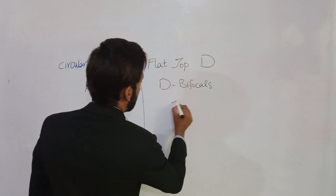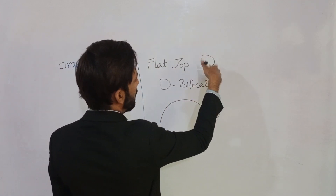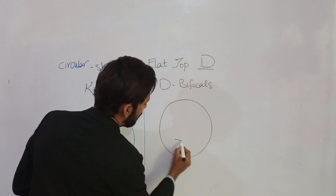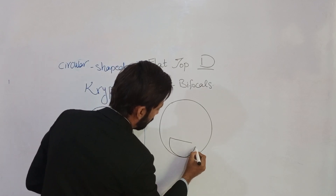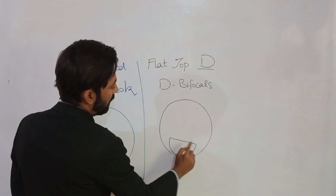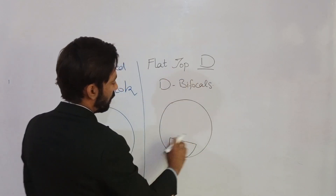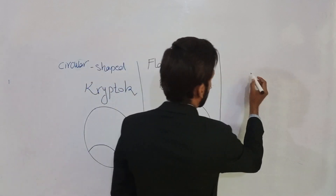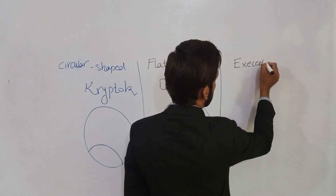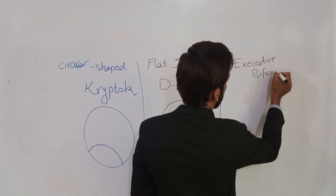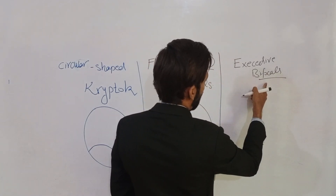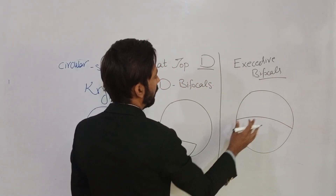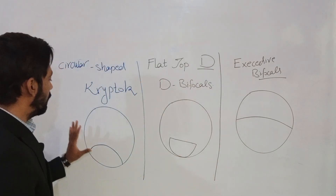The shape of the flat-top D is like a 'D' standing upright with the flat portion at the top — that's why it is called flat-top D. The shape is referred to as FTD or flat-top D-shaped bifocals. The next type is the executive bifocal — different authors pronounce it differently. The executive bifocal has a distinct shape covering a large area at the bottom of the lens.